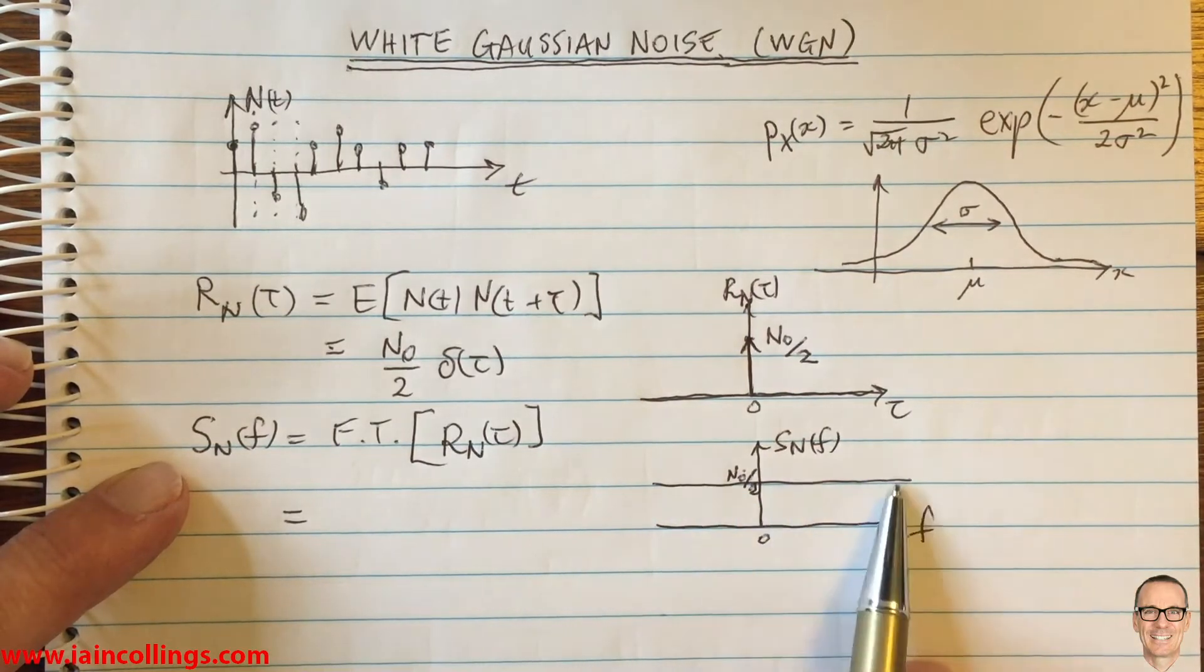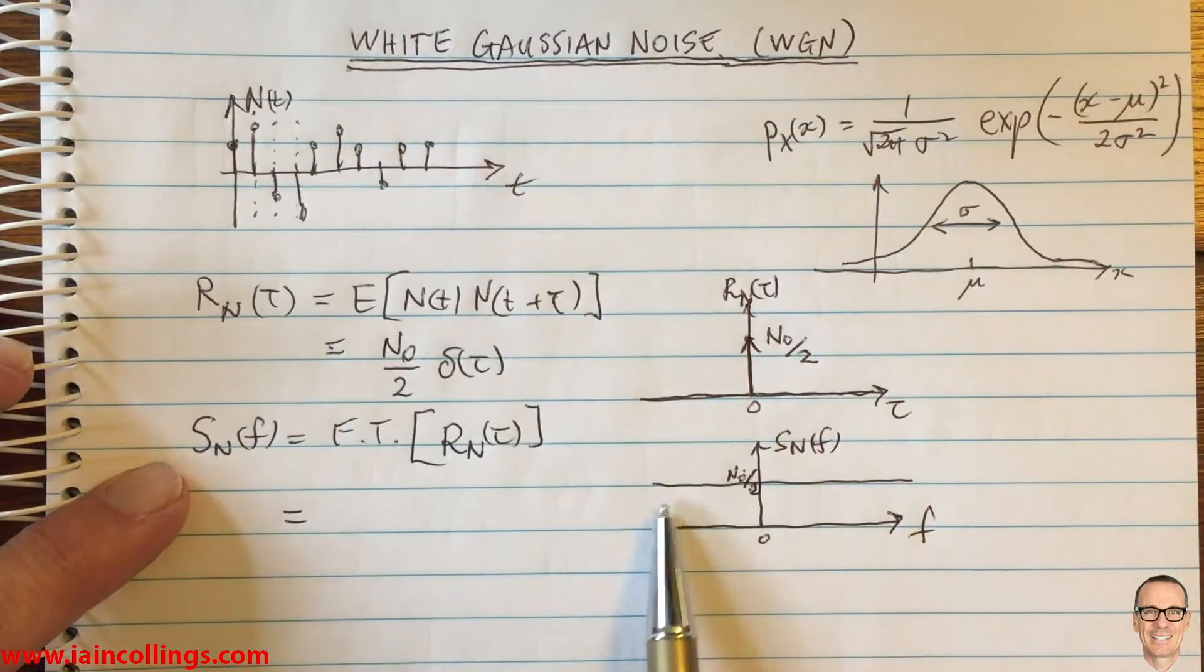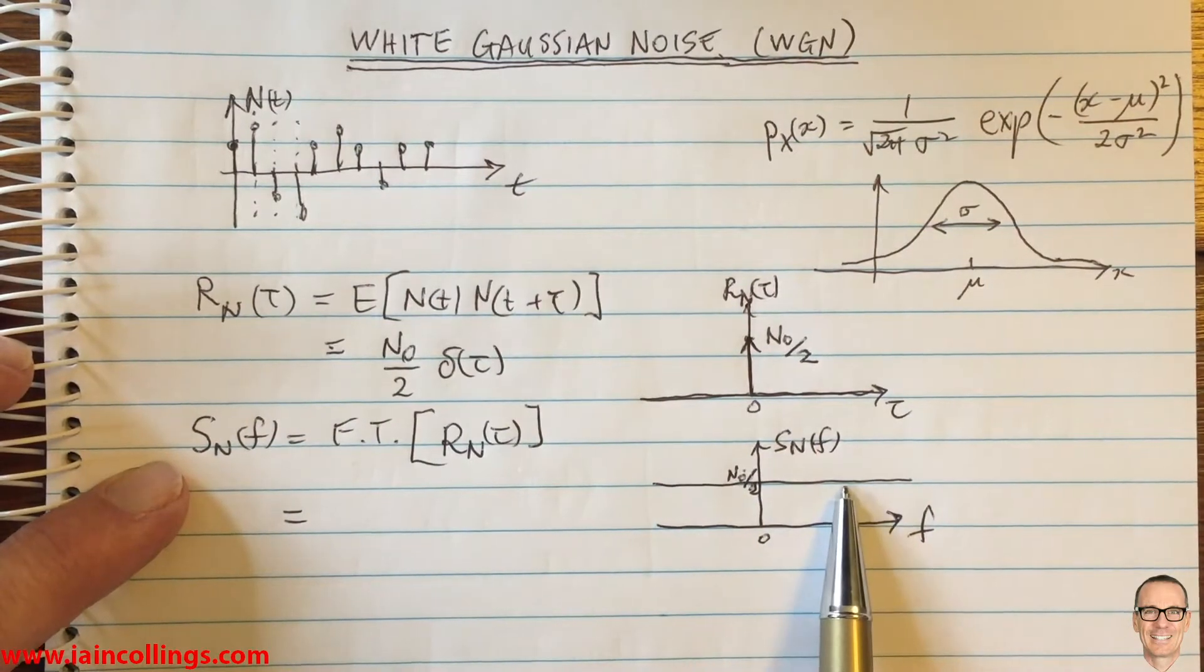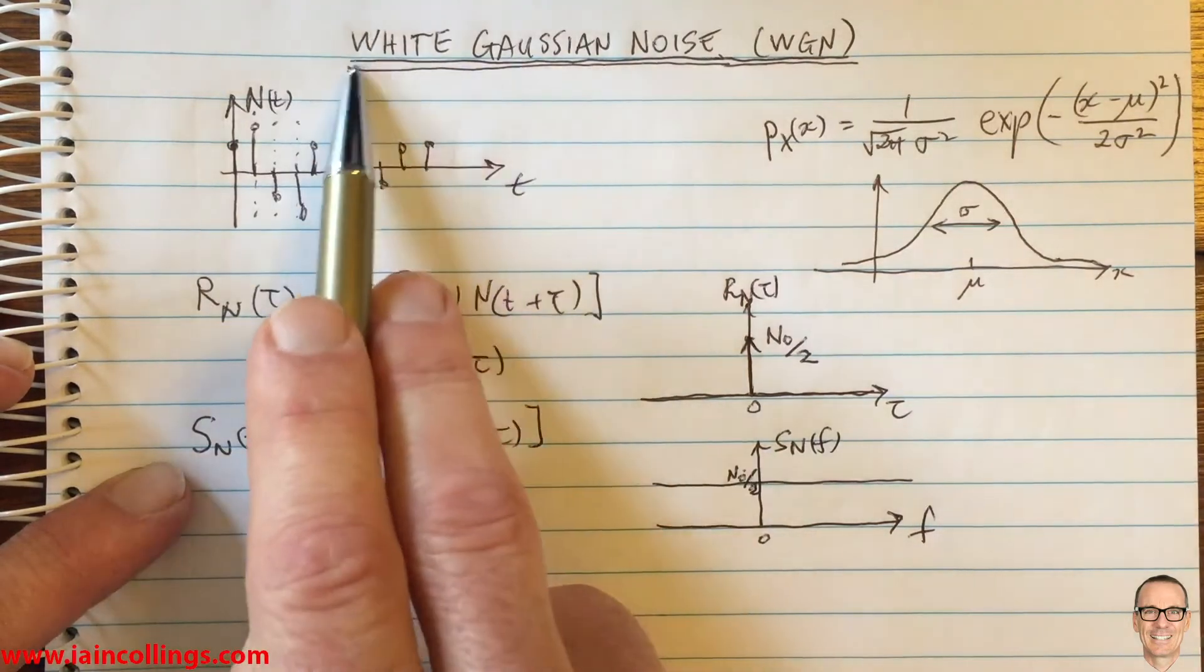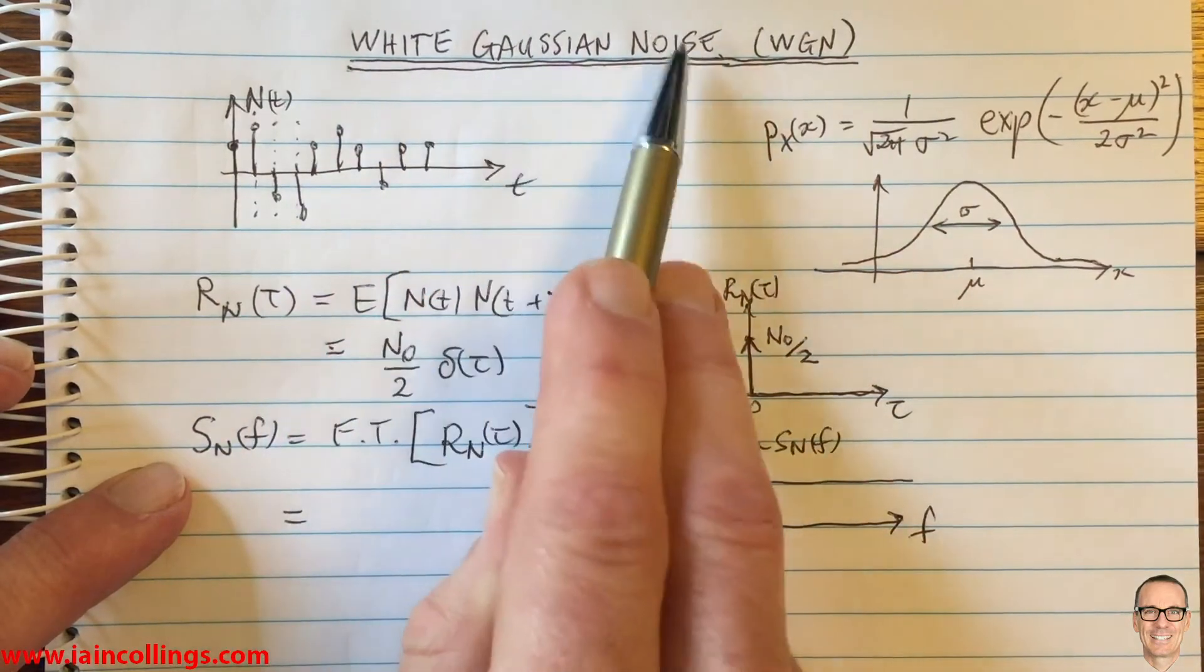This is why it's called white noise, because all the frequencies are equally represented. That's exactly the same as what happens in white light, where all the different colors of the rainbow are equally represented. So that's why it's called white Gaussian noise.